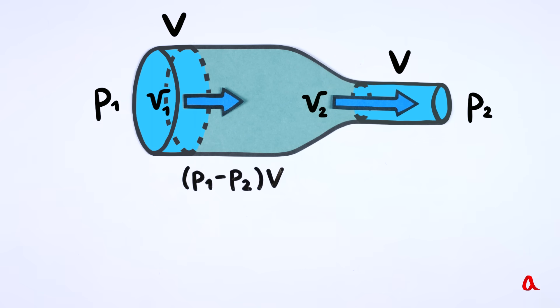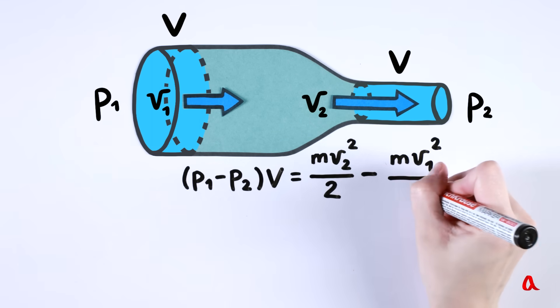When there are no losses, all this work goes to increase the kinetic energy of water. Mass is the product of volume multiplied by density. In this case, the volume decreases, so we can rewrite the formula in the following way.